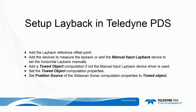So what we have seen in this movie: define a layback reference offset point — this is normally the aft of the vessel, and this point is later selected in the towed object computation properties. Add the devices to the equipment list to measure the layback — this can be cable length meters and depth meters. It is possible to select manual input devices, or alternatively use the manual input layback device to enter manually the horizontal layback. Add a towed object advanced computation if the manual input layback device driver is not used. Set the towed object computation properties. Set the position source of the side scan sonar computation properties to the towed object computation.